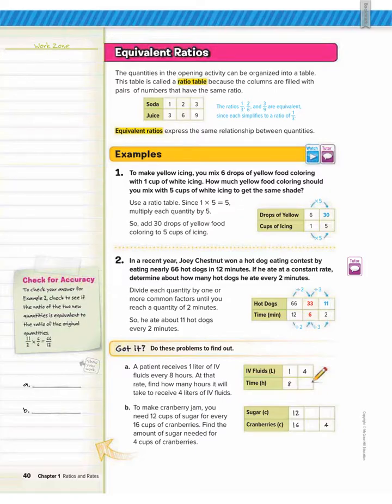First we're going to talk about some definitions. The table below is called a ratio table because the columns are filled with pairs of numbers that have the same ratio. So 1 to 3 is equal to 2 to 6 is equal to 3 to 9 because all of these simplified equal one-third. Equivalent ratios express the same relationship between quantities. So again, all of these ratios are equivalent because when simplified they all equal the same thing.